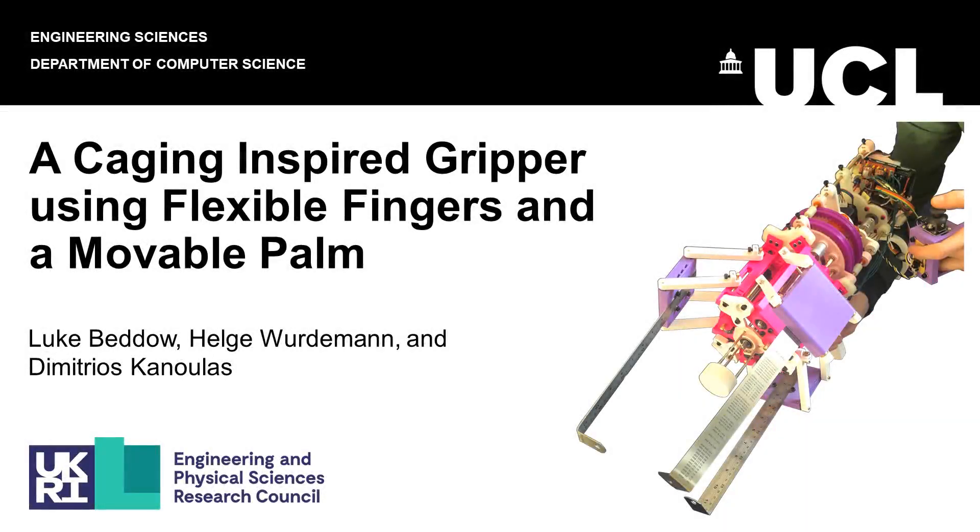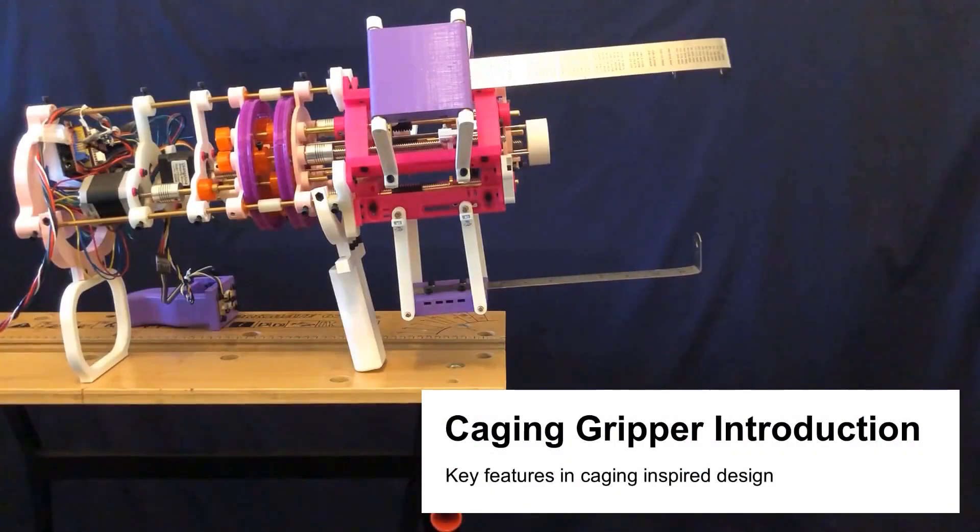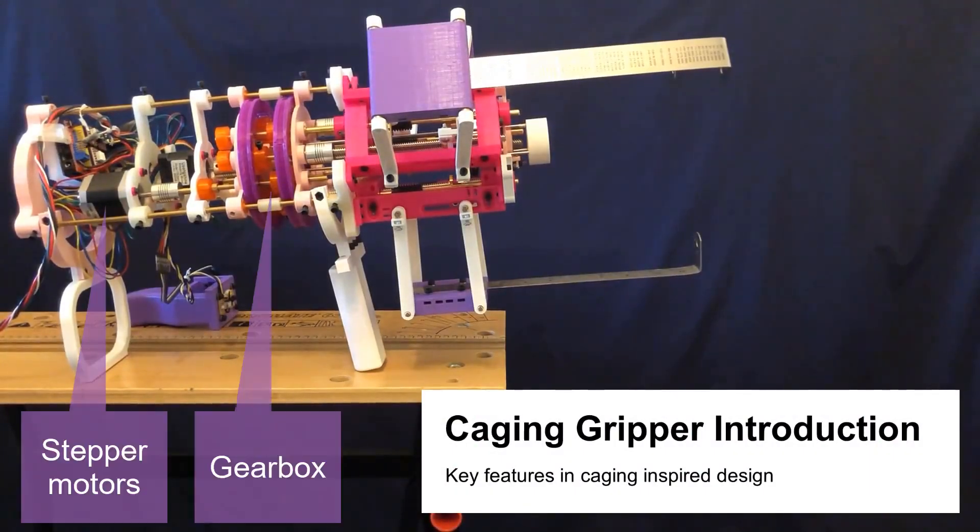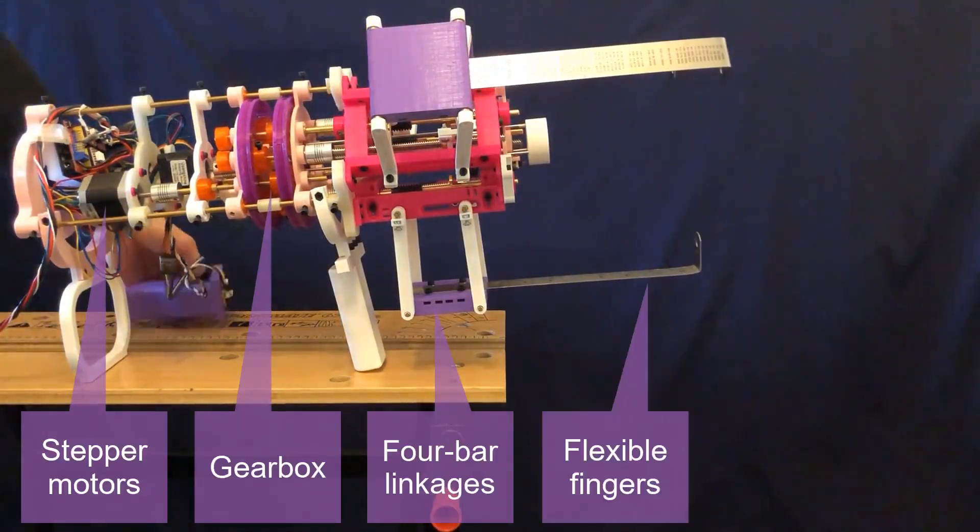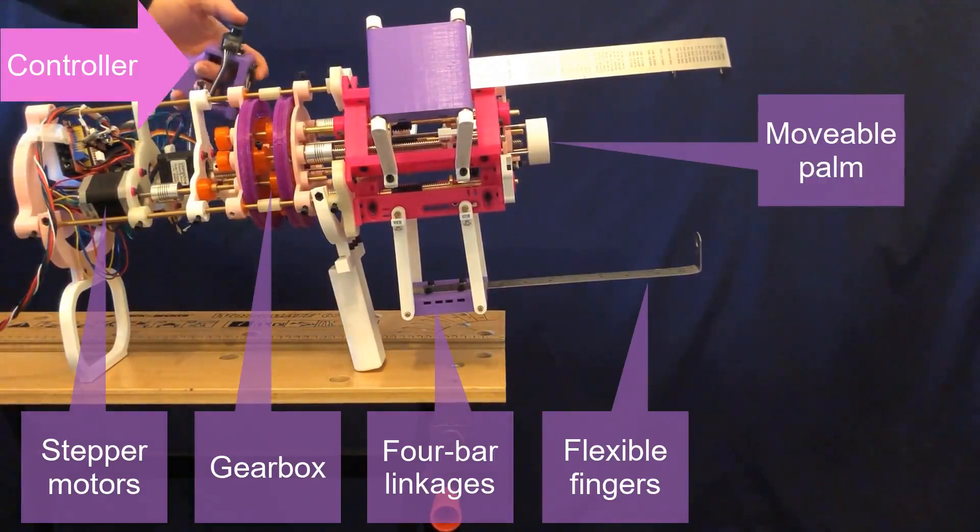A caging inspired gripper using flexible fingers and a movable palm. First, an introduction to the gripper showing key design elements including flexible fingers and a movable palm.